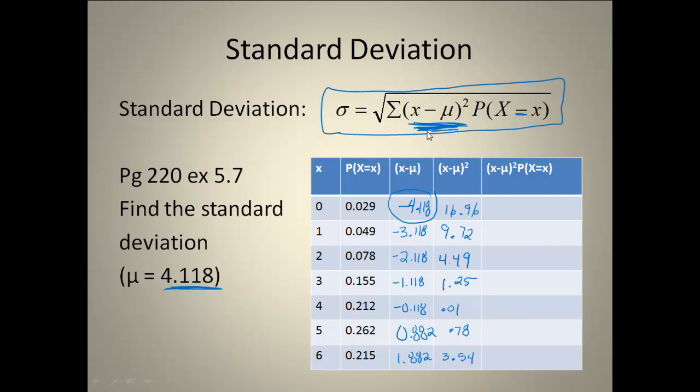That takes care of the X minus μ squared. Now I have to take each of those values and I have to multiply it by the probability that X equals X. I'm going to take my X minus μ squared column here, and I'm going to multiply it by my probability column. In this first part, I'm going to take 16.96 times 0.029. When I multiply those together, I get 0.49. Second box, I'm going to take 9.72, and I'm going to multiply it by 0.049. And I would continue doing that all the way through.